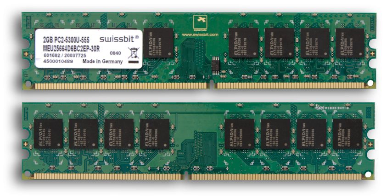Since every ring had a combination of address wires to select and read or write it, access to any memory location in any sequence was possible. Magnetic core memory was the standard form of memory system until displaced by solid state memory in integrated circuits, starting in the early 1970s. Dynamic random access memory allowed replacement of a 4 or 6 transistor latch circuit by a single transistor for each memory bit, greatly increasing memory density at the cost of volatility. Data was stored in the tiny capacitance of each transistor, and had to be periodically refreshed every few milliseconds before the charge could leak away. The Toshiba BC1411 electronic calculator, introduced in 1965, used a form of DRAM built from discrete components.